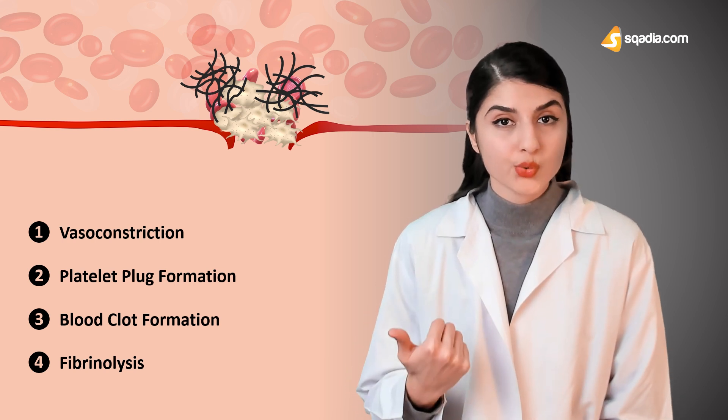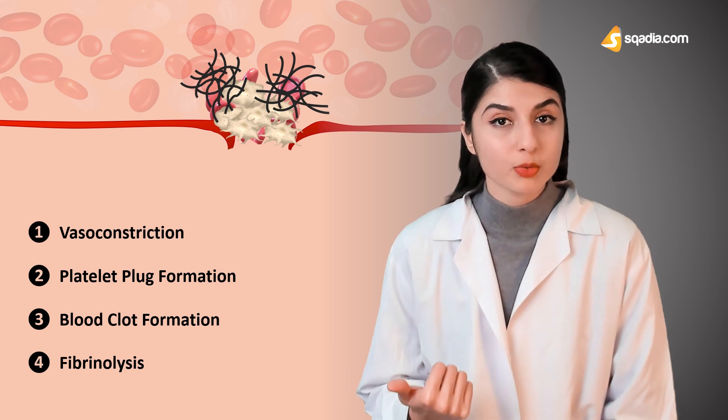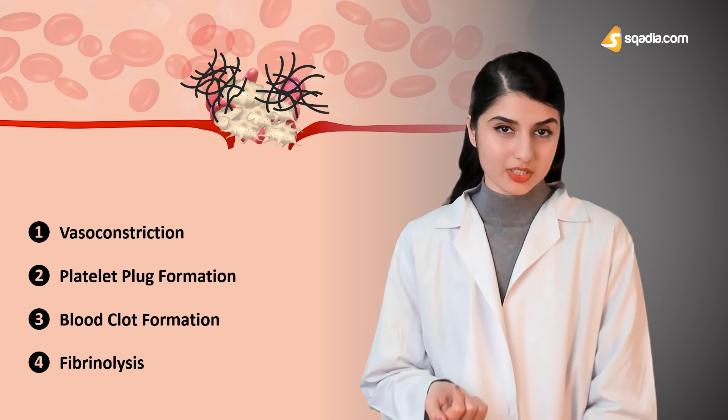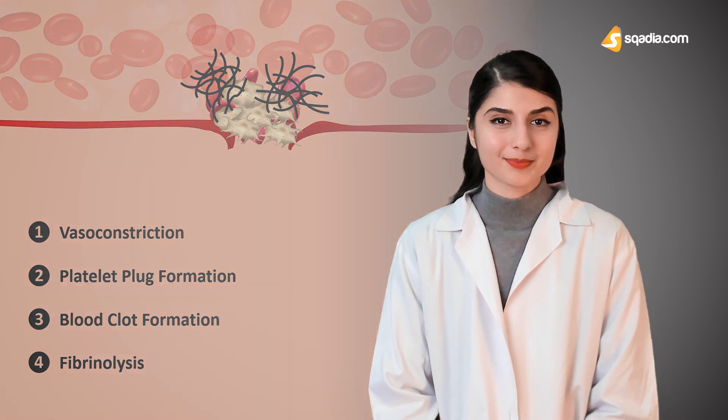So these are the four steps: firstly vasoconstriction, secondly platelet plug formation or primary hemostasis, thirdly blood clot formation or secondary hemostasis, and fourthly fibrinolysis. We went into depth on all four of these steps. If you have any queries, do let us know in the comments below, and stay tuned on scadia.com.